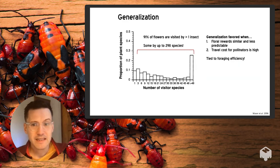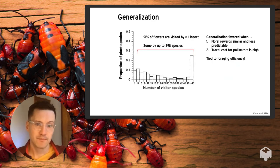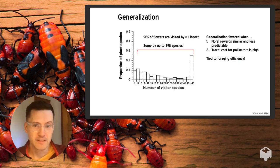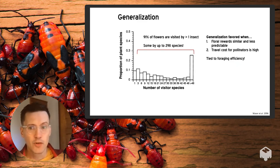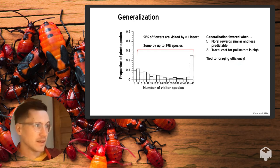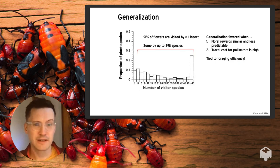In reality, most plants — even those involved in obligate mutualisms — are visited by more than one species of pollinator, and pollinators typically visit more than one plant taxon. Generalization, it would appear, is actually more the norm than the exception. This strategy is favored because floral rewards are not predictable over space and time, and foraging efficiency is a really important determinant of how pollinators choose which plants to visit. A meta-analysis showed that 91 percent of plant species are visited by more than one insect, with some visited by almost 300 different insects.